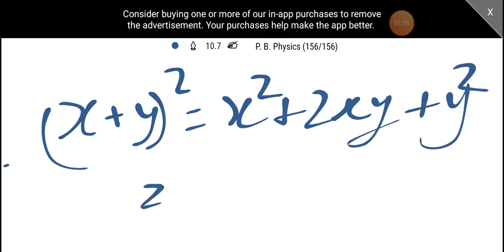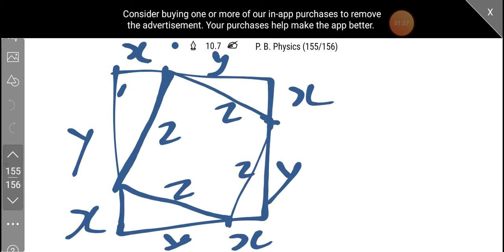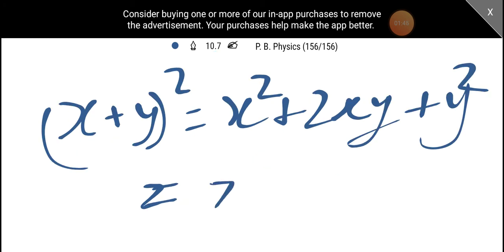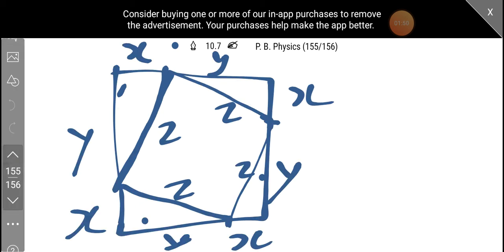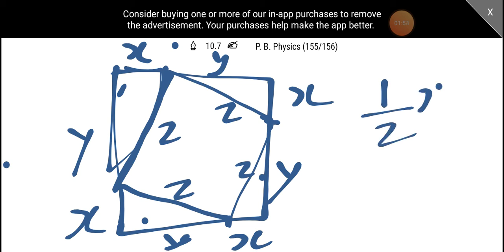Now, what does the total area mean? This triangle area is the total area is equal to z² plus the four triangles. Each triangle is equal to half into xy. Then, the four triangles are equal to 2xy. So z² plus 2xy, okay.